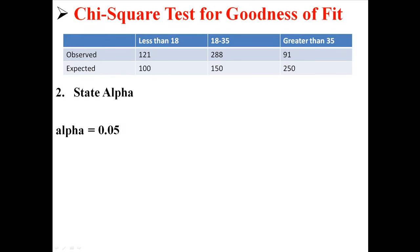Alpha is going to be 0.05, just like always. Calculating degrees of freedom is done like this. We just take the number of groups we have and subtract 1. Here we have 3 groups: less than 18, 18 to 35, and greater than 35. So, we just take 3 minus 1 and get 2 degrees of freedom.